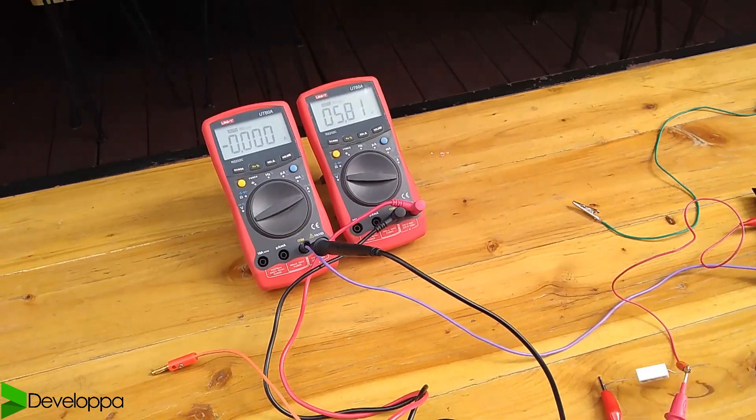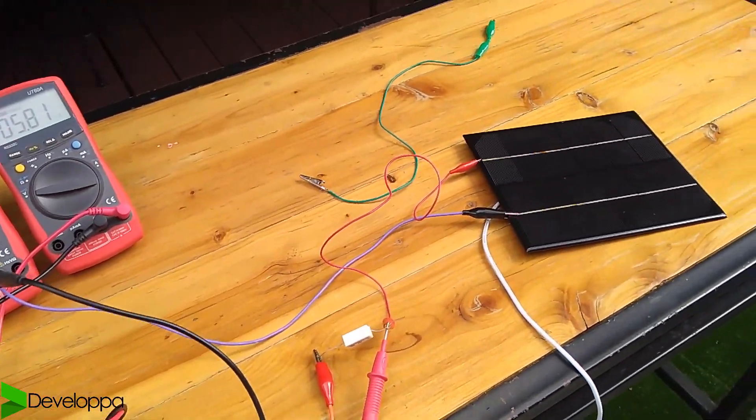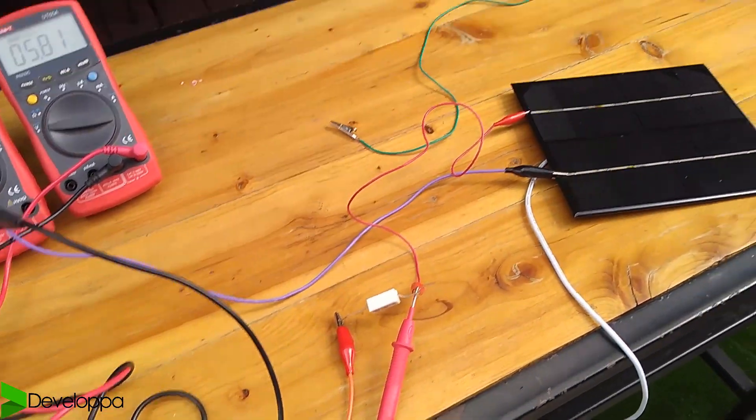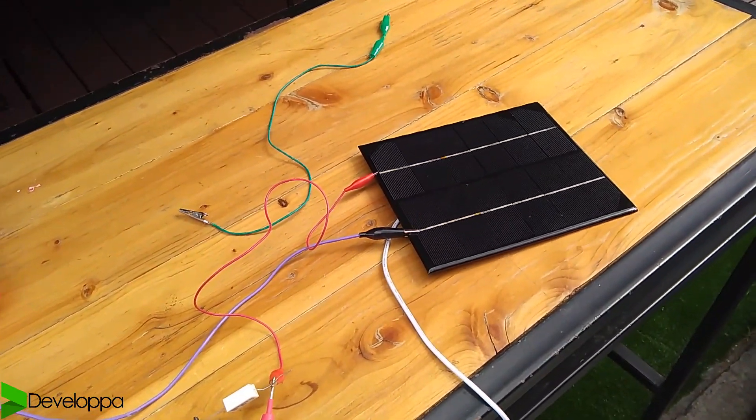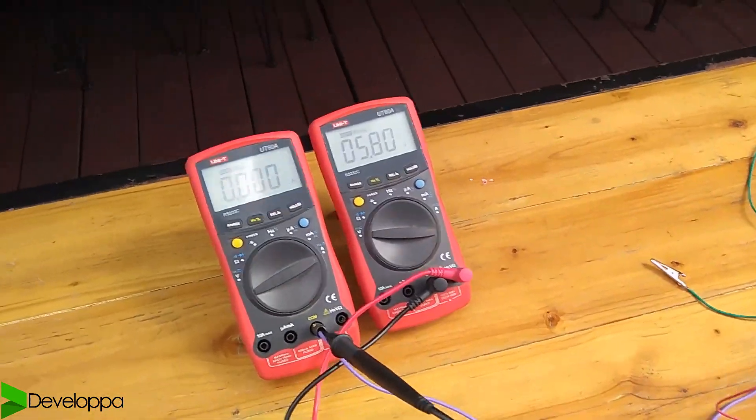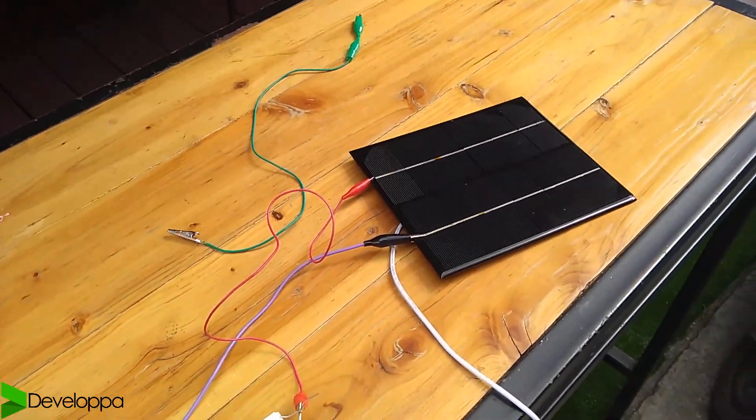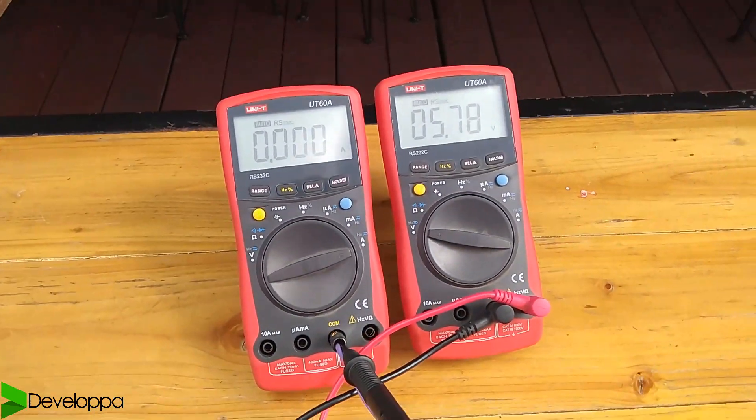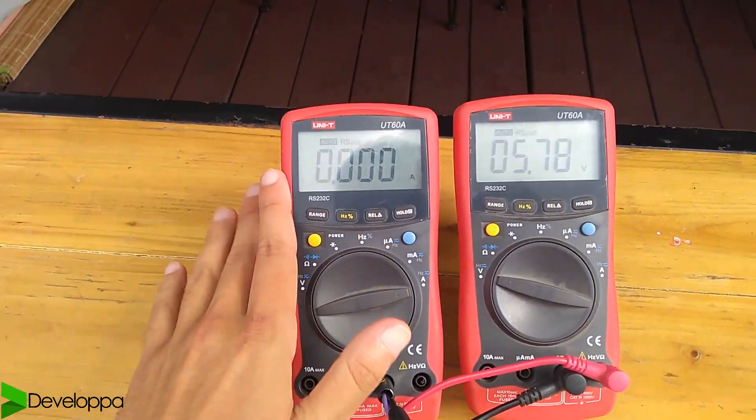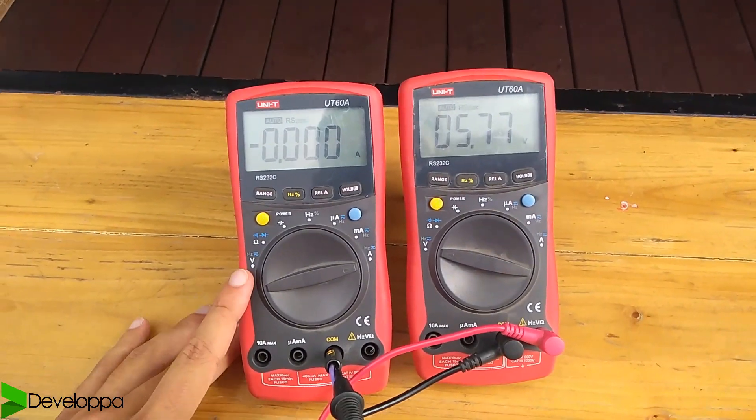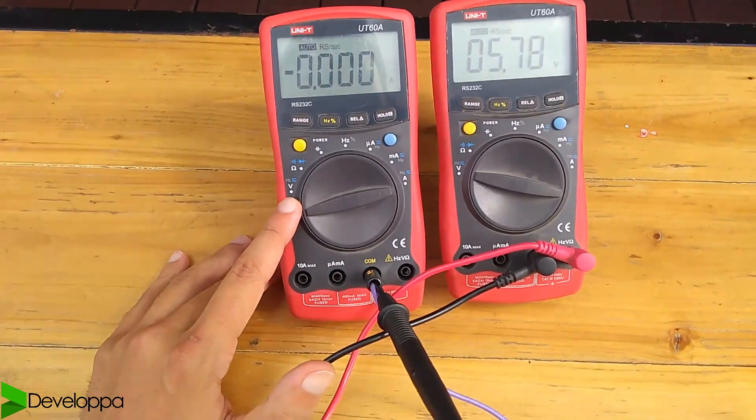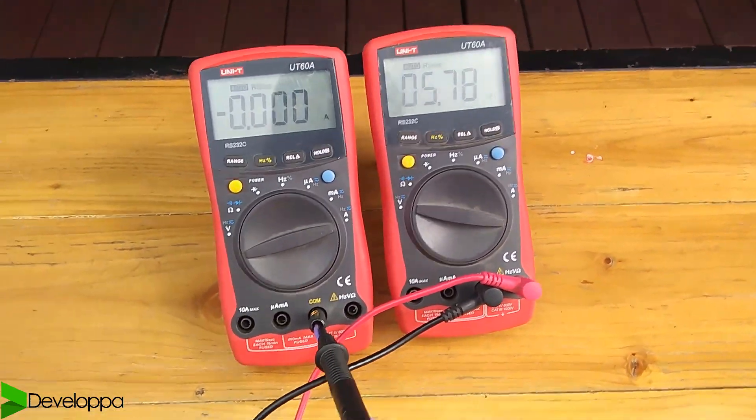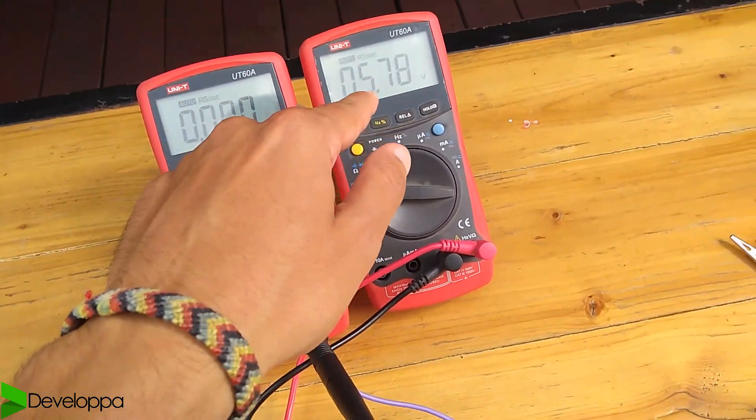So what I did was connect an external load and try the panel that way too, so I can have more control and look into what's happening. As you can see, we have here the solar panel and we have two multimeters. This one to the left is set as a current meter, and then the one to the right as a voltmeter. So what we're measuring right now is the open circuit voltage.